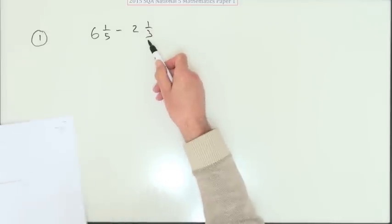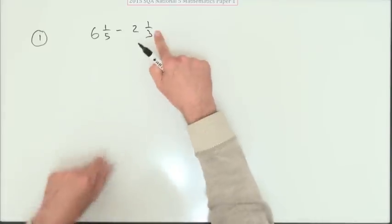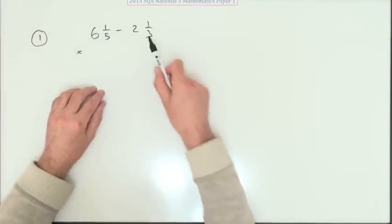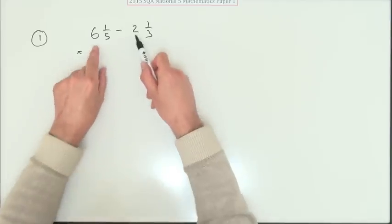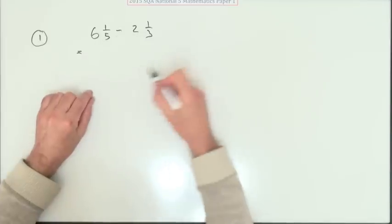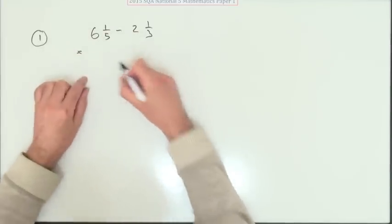Straight away you can see it's a bit nasty because you're taking a bigger fraction away from a smaller one. Still, the easiest way to do addition and subtraction is to stick with mixed numbers because then you can just do the whole numbers separately from the fractions. Six take away two is four.